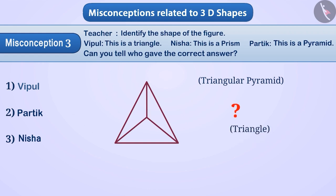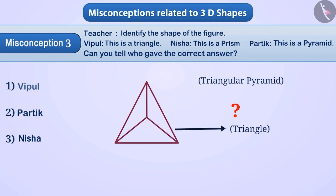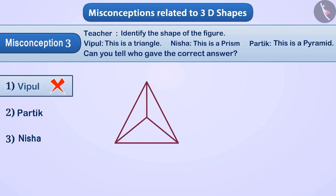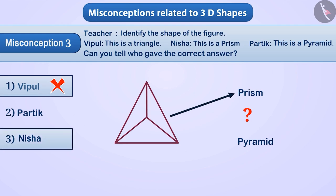Due to this confusion, they consider the given shape as a triangle, thinking Vipul gave the correct answer, and select option 1 — but this is incorrect. Some children confuse prisms and pyramids, considering the figure to be a prism and finding Nisha's answer correct, selecting option 3 — but this is also incorrect.